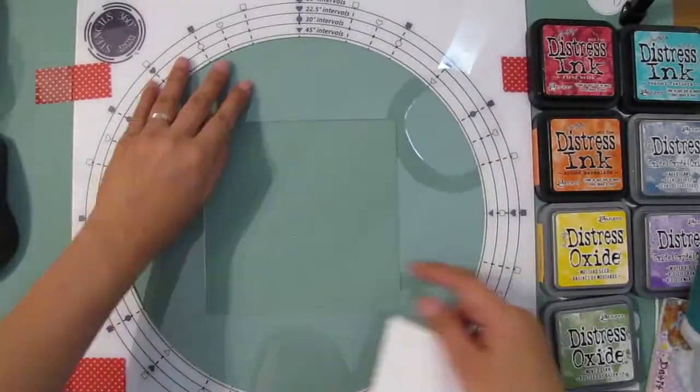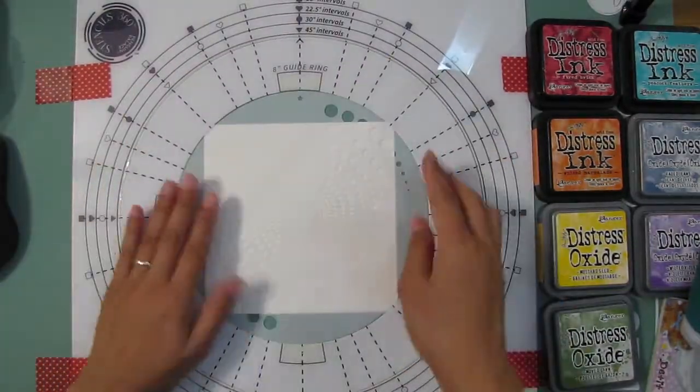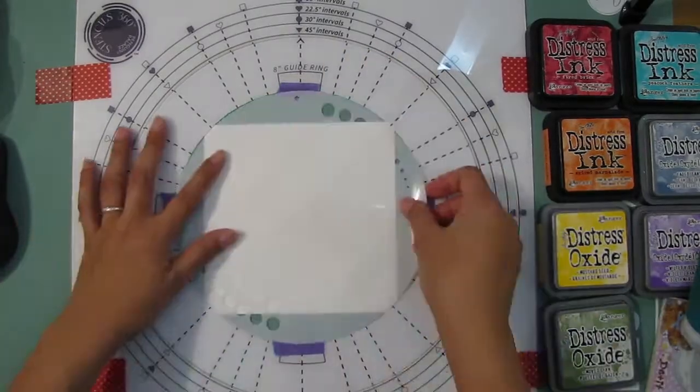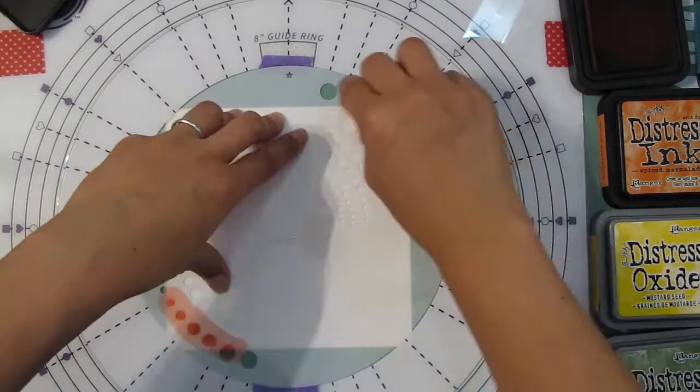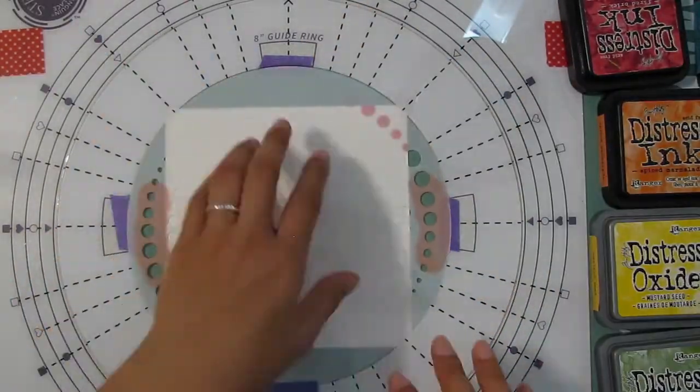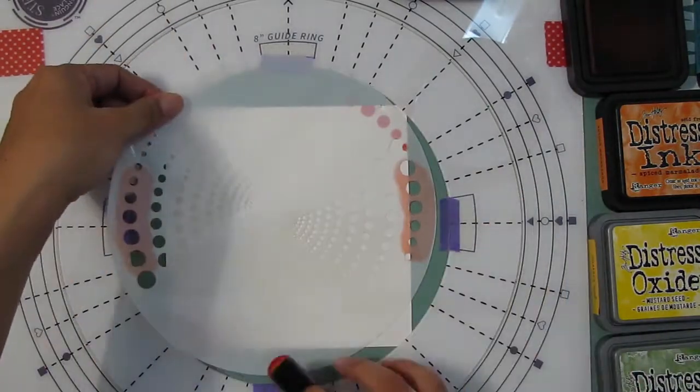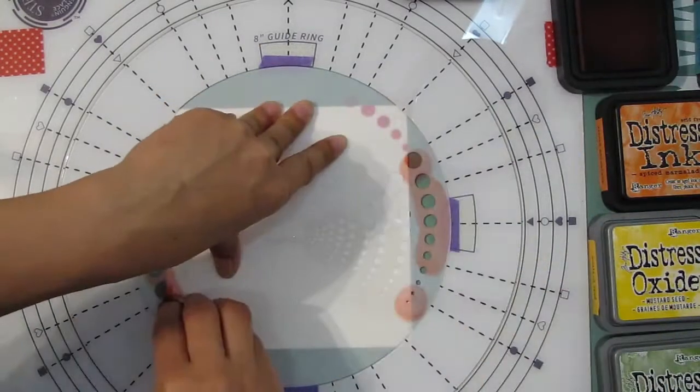Here I have my Stencils 360 already taped down to my workspace, which I keep taped down under my working mat. I inserted the 6-inch paper guide and laid down my 6x6 cardstock, took that paper guide out, and then inserted the 8-inch guide ring.